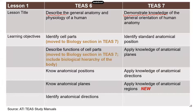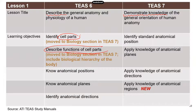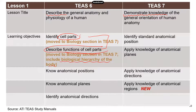Now in terms of learning objectives, this really tells us what we need to focus on. In TEAS 6, this first lesson originally covered the cell — you had to identify the different cell parts and know their functions. But this has nothing to do with anatomy and physiology. So in TEAS 7, these two learning objectives have been moved to the biology section, which is a great move. Also included is the biological hierarchy of the body: from atom to molecule to organelle to cell, tissue, organ, organ system, and the body.